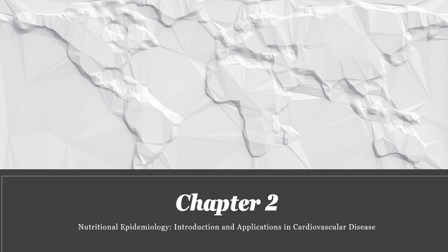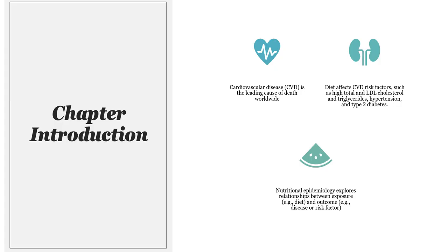Today we're going to discuss chapter 2: nutritional epidemiology and its evaluation on cardiovascular disease. In science, how we come to any conclusion that there's a cause and effect or a relationship between two variables, we need to do research. This chapter talks about how we do that research in a meaningful way that's reliable — meaning we get the same result each time — and valid, so we actually know what we're measuring.